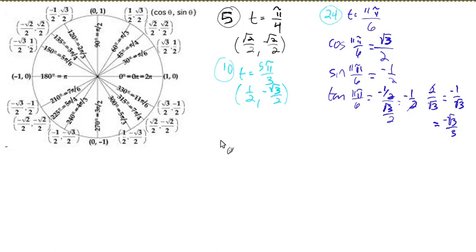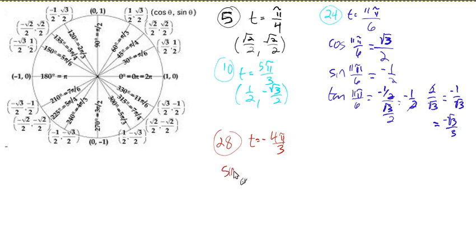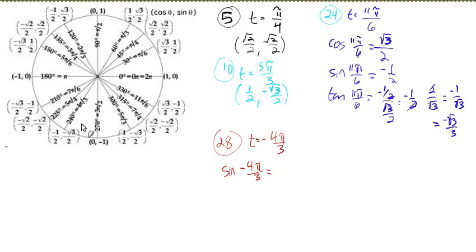Let's do that one more time — number 28. T is now negative four pi over three. To find negative four pi over three on the unit circle, here is positive pi over three. So negative pi over three, negative two, three, four — counting back four units of pi over three. Negative four pi over three is right there.